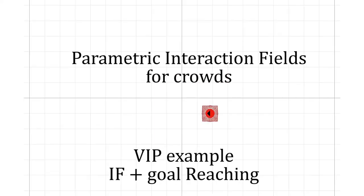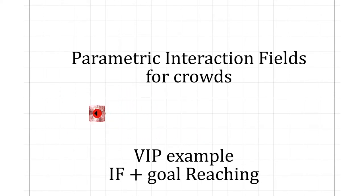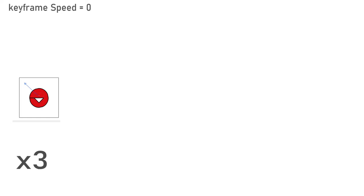In order to make interaction fields change dynamically according to certain parameters related to the simulation, such as interactions with other agents changing depending on the agent's speed, we also provide a parametric version of the interaction fields.